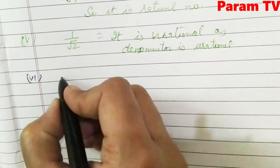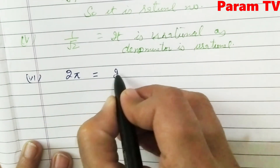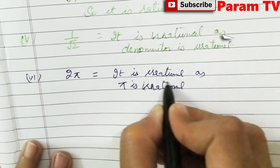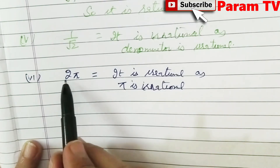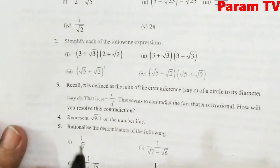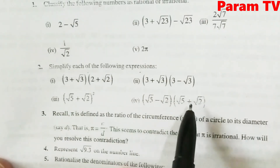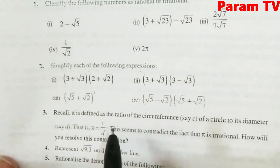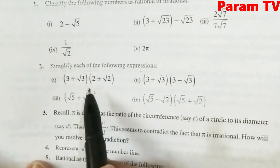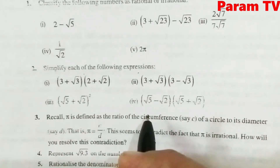The next part is 2π. Pi is an irrational number. This is irrational because π is irrational, and this is a product of a rational and an irrational number, so it is irrational. Now Question 2: simplify each of the following expressions using products, formulas, and all operations.